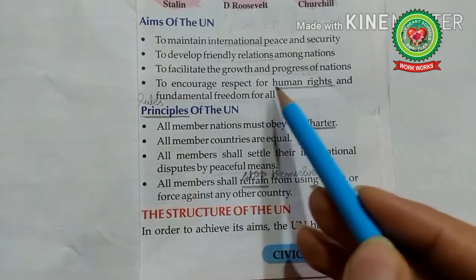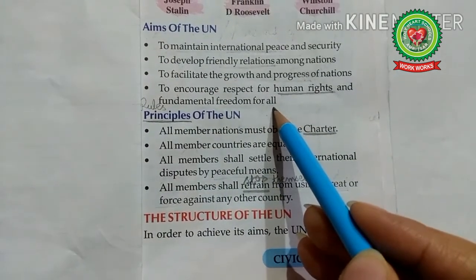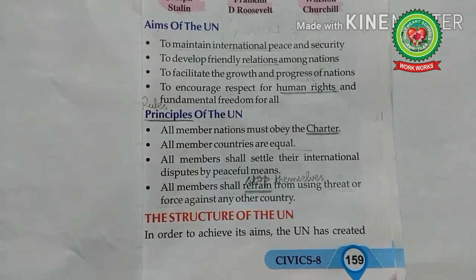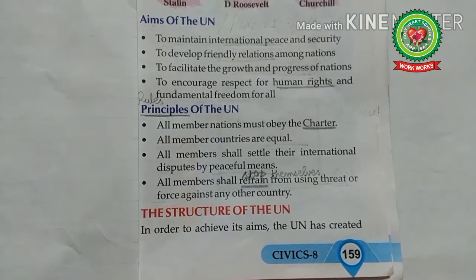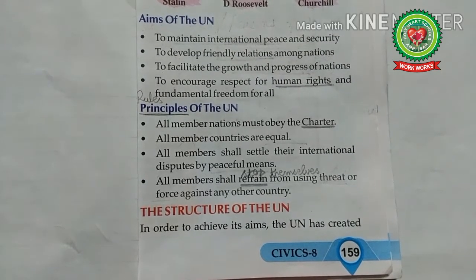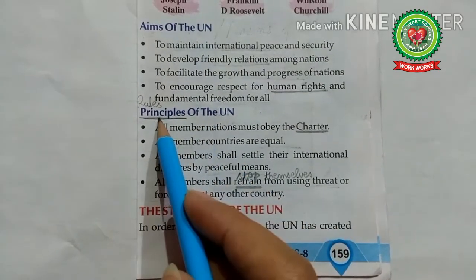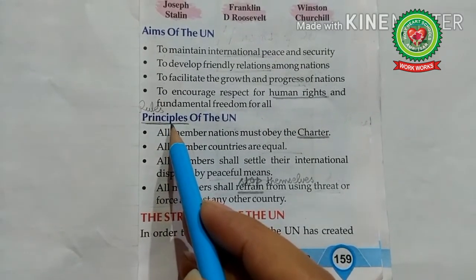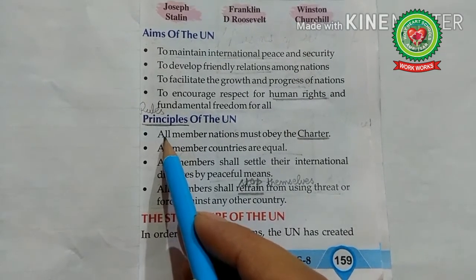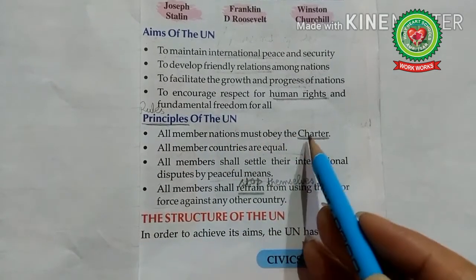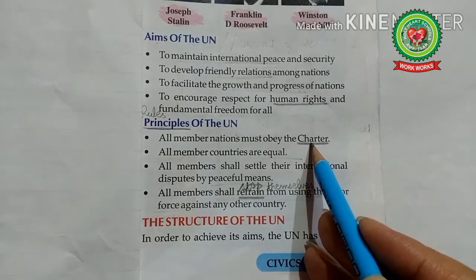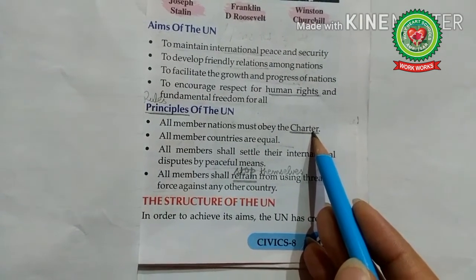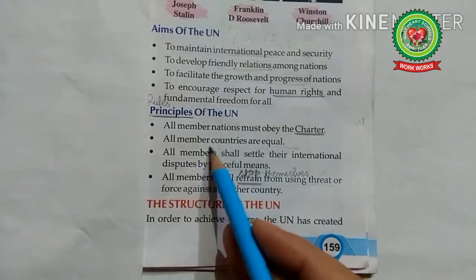The fourth aim is to encourage respect for human rights and fundamental freedom for all — to ensure respect for the principles of fundamental human rights and freedom of all people without discrimination on the basis of caste, religion, language, etc. Principles of the UN are the rules every member nation must follow. First principle: all member nations must obey the charter — they have pledged to fulfill their obligations under the charter in good faith. Second principle: all member countries are equal.